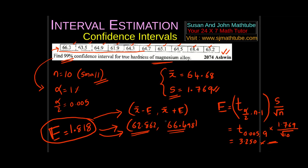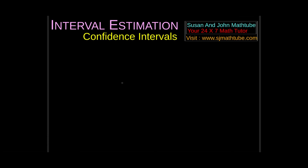My conclusion is: I am 99% confident that the true hardness of magnesium alloy will be between 62.862 and 66.498. Now let's try one more question, and this time we are going to learn about proportion.